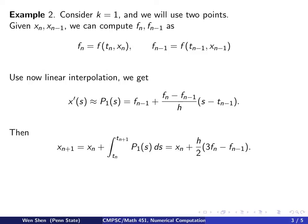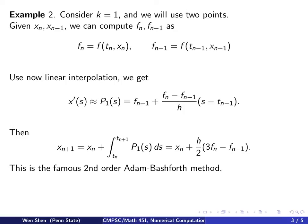Then you can set up your numerical scheme, and the step change in x will be the integral over this time interval of p1. If you work out this integral in t, you get 3/2 times h in front of f_N, and negative 1/2 times h in front of f_{N-1}. This is the well-known second-order Adams-Bashforth method.